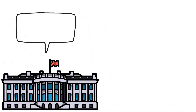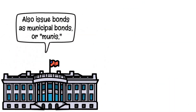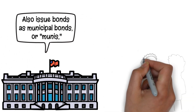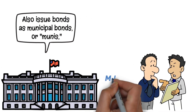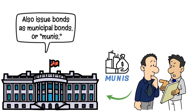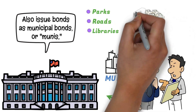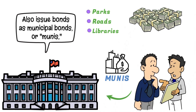Local governments may also issue bonds as municipal bonds, or munis, that will often carry certain tax advantages and exemptions for investors. Munis can be thought of as loans that investors make to local governments, and they're used to fund public works such as parks, roads, libraries, and other infrastructure. They may be funded via local tax dollars or by the revenue generated from the project.